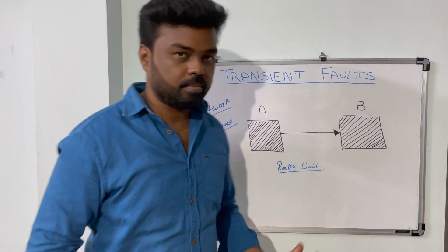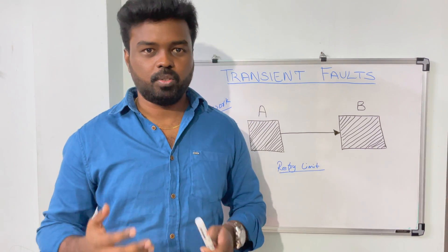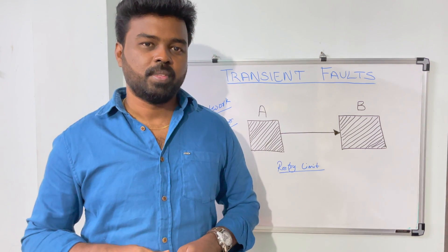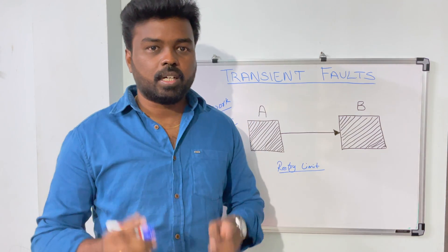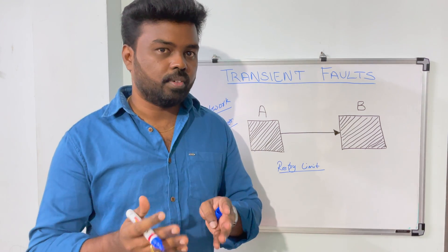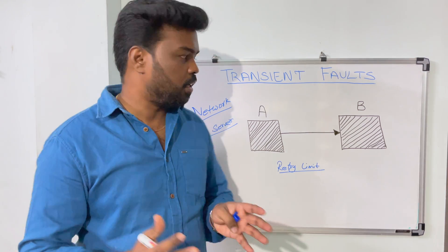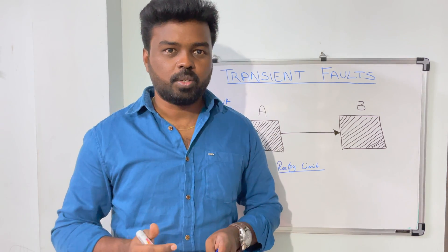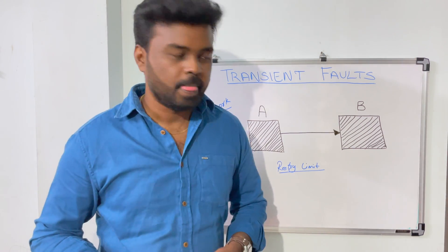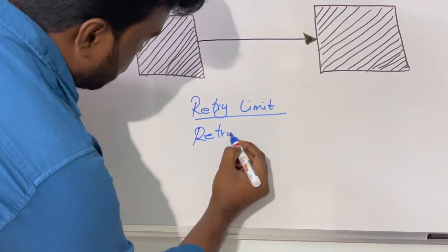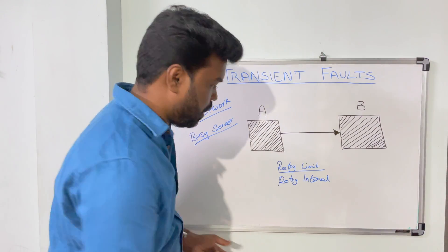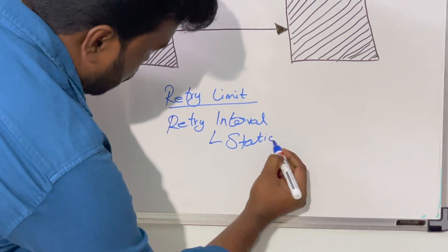I would highly recommend having the retry limit as a configurable value, so you can have a different value in your non-production environment and a different value in production. In addition to the retry limit, we also need to consider the time interval between successive retries. You cannot retry immediately — that will consume a lot of CPU resources and not let the system do any other work. You need to give the server proper breathing time before the next retry, which is called the retry interval. There are two types: static and dynamic.